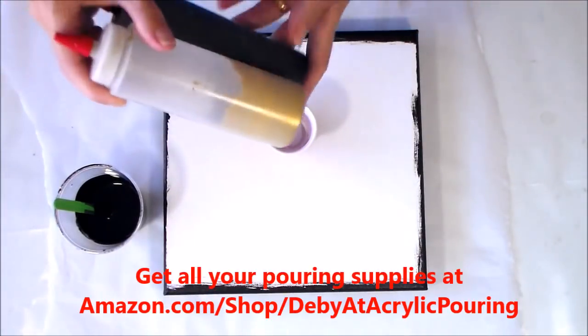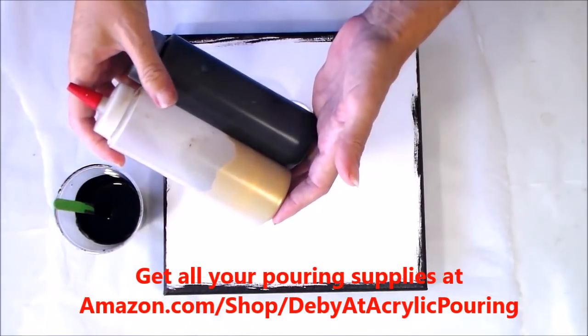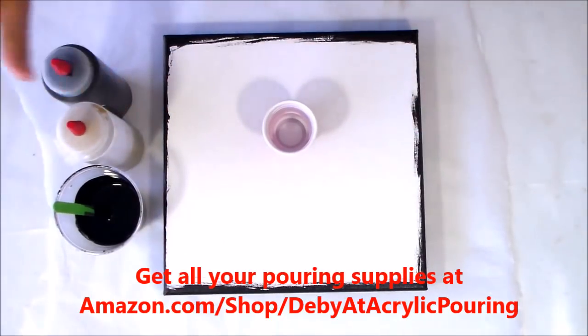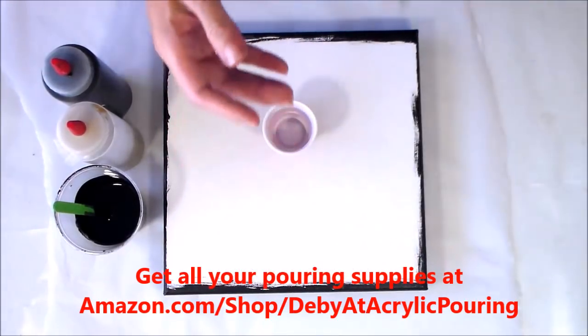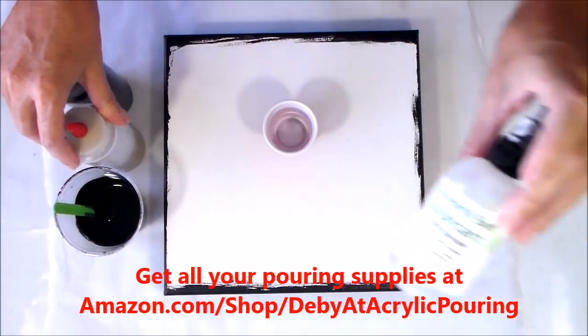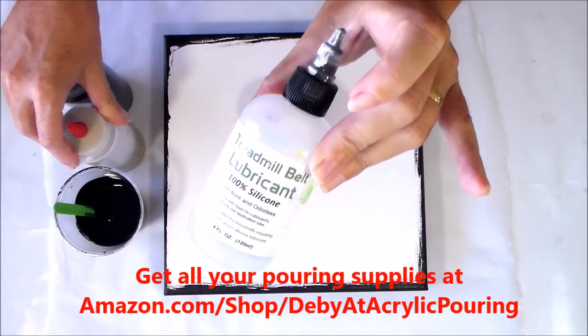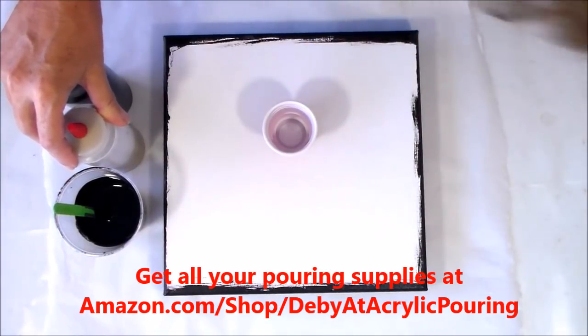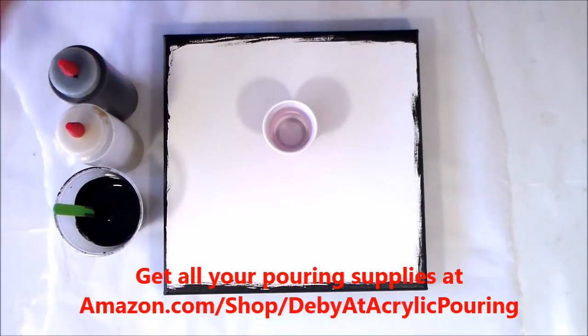So in terms of my mix, my paints are pre-mixed in these bottles and those are two parts of the acrylic paint to one part of Floetrol and for bottles these size which are 8oz bottles, I generally put around 10 to 12 drops of the Treadmobile silicone in there. Plus water as needed to get the pouring and creamy consistency.